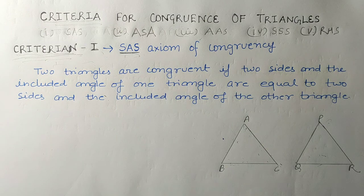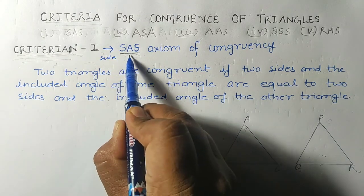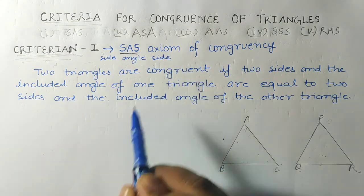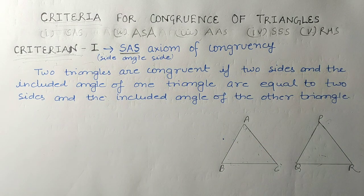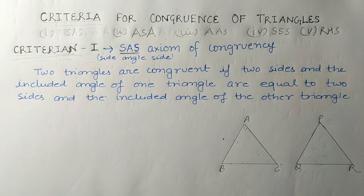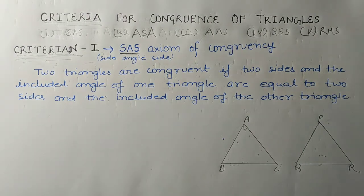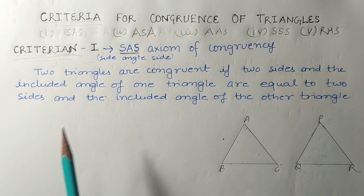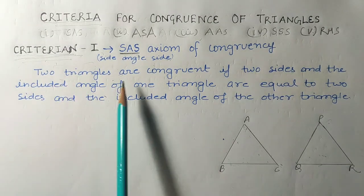SAS stands for Side-Angle-Side: S stands for side, A stands for angle, and the second S also stands for side. This is the Side-Angle-Side axiom of congruency. As discussed in Chapter 5, axioms are general facts for which proof is not required — and SAS is also such a general fact, so proof is not required.